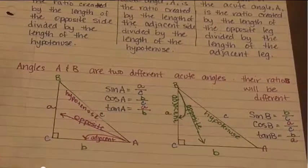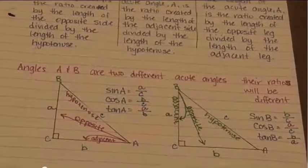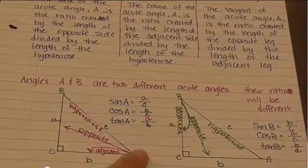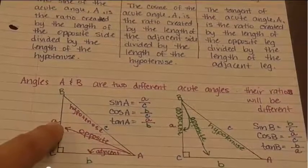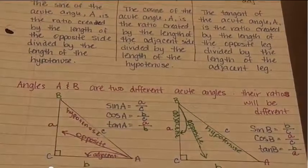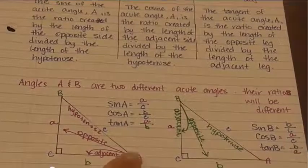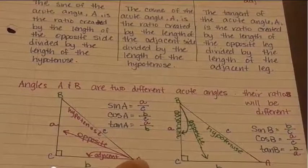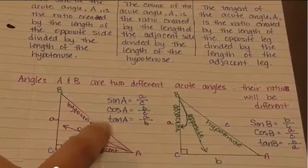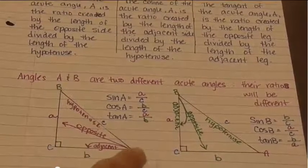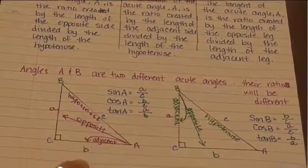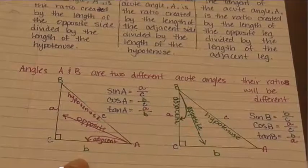Angles A and B are two different acute angles, so their ratios will be different. The sine of A is the opposite side, which is side little a, divided by the hypotenuse — so a divided by c. The cosine of A, still from angle A, is the adjacent side, which is side b, divided by the hypotenuse. And the tangent of angle A is the opposite side divided by the adjacent side, so a over b.